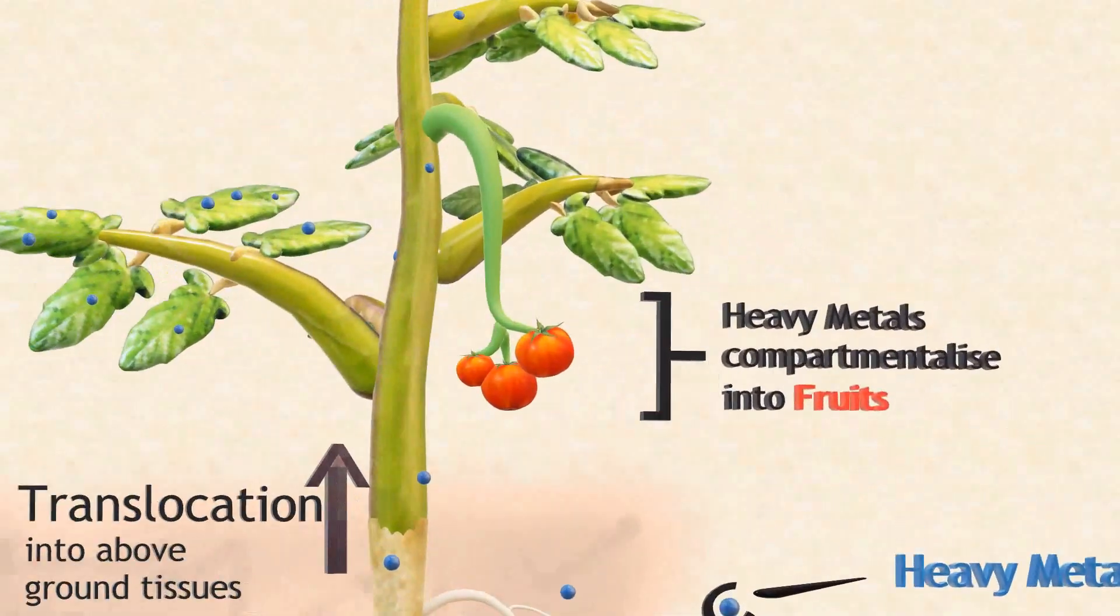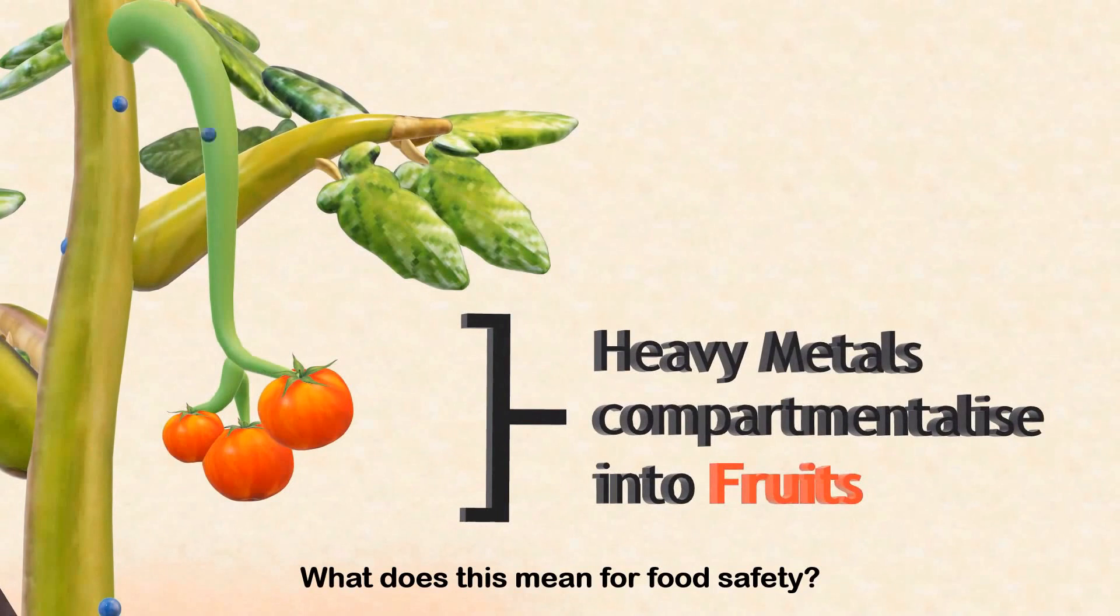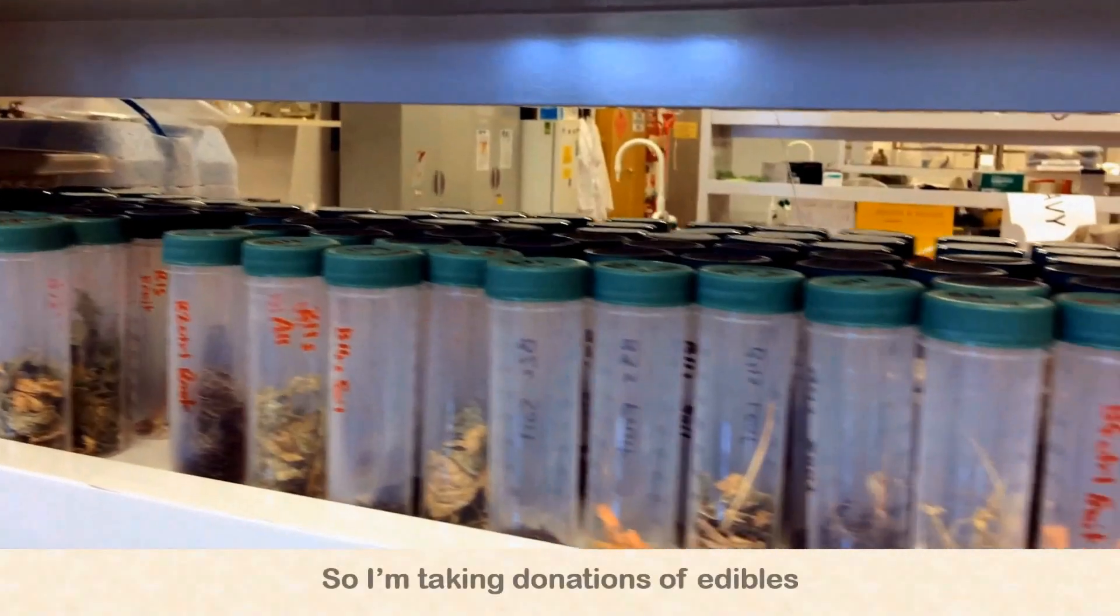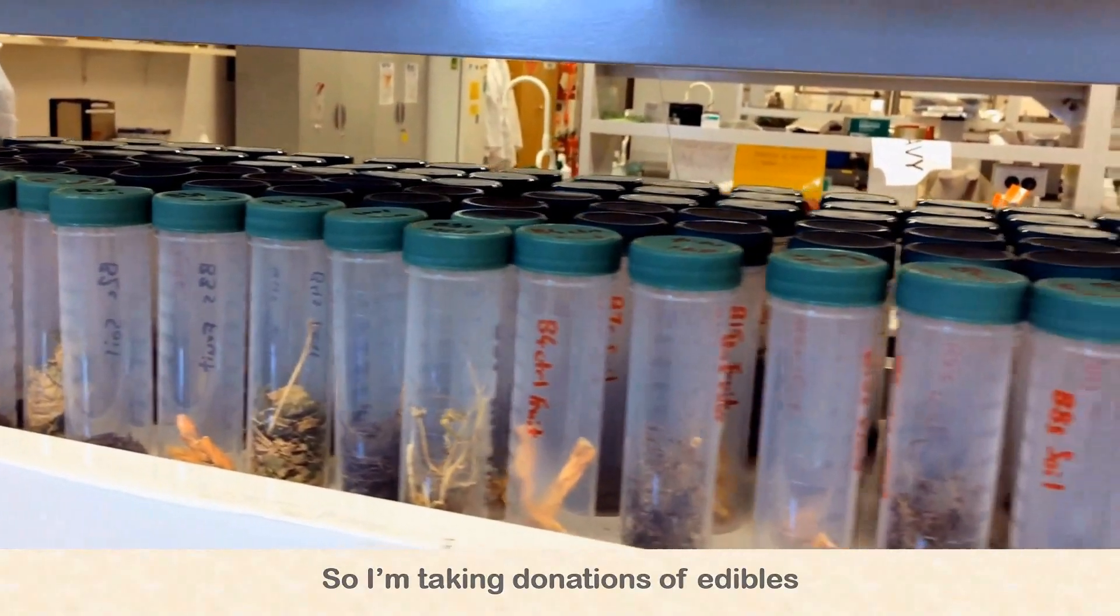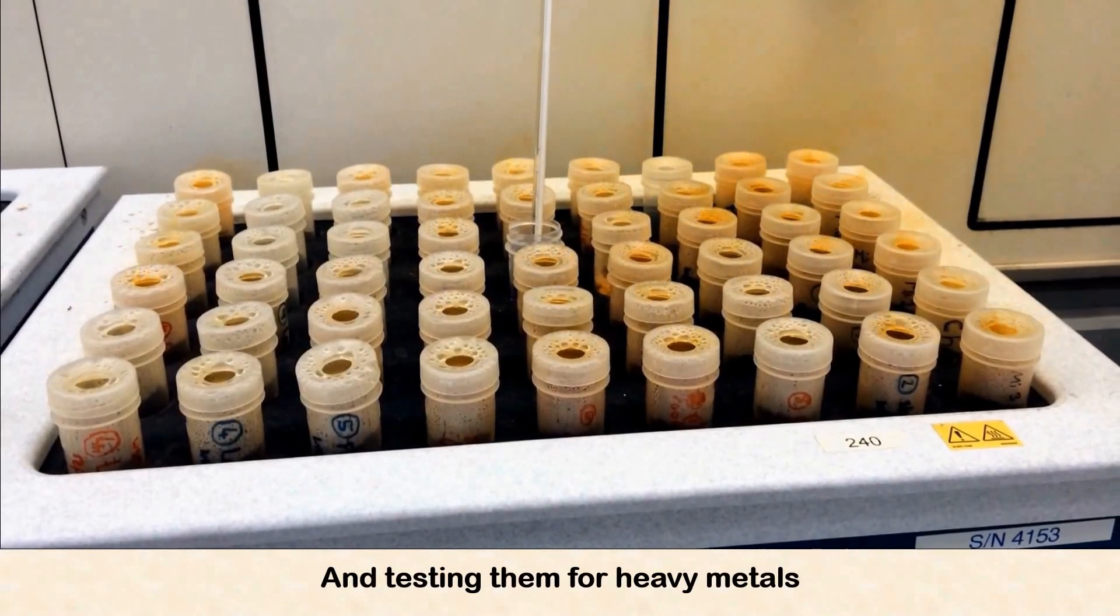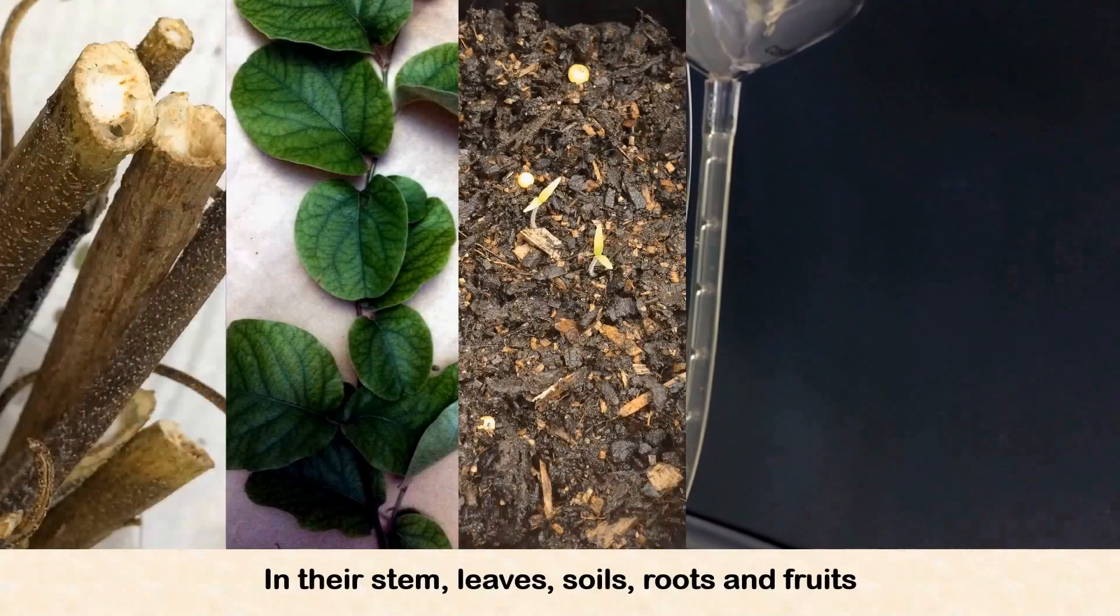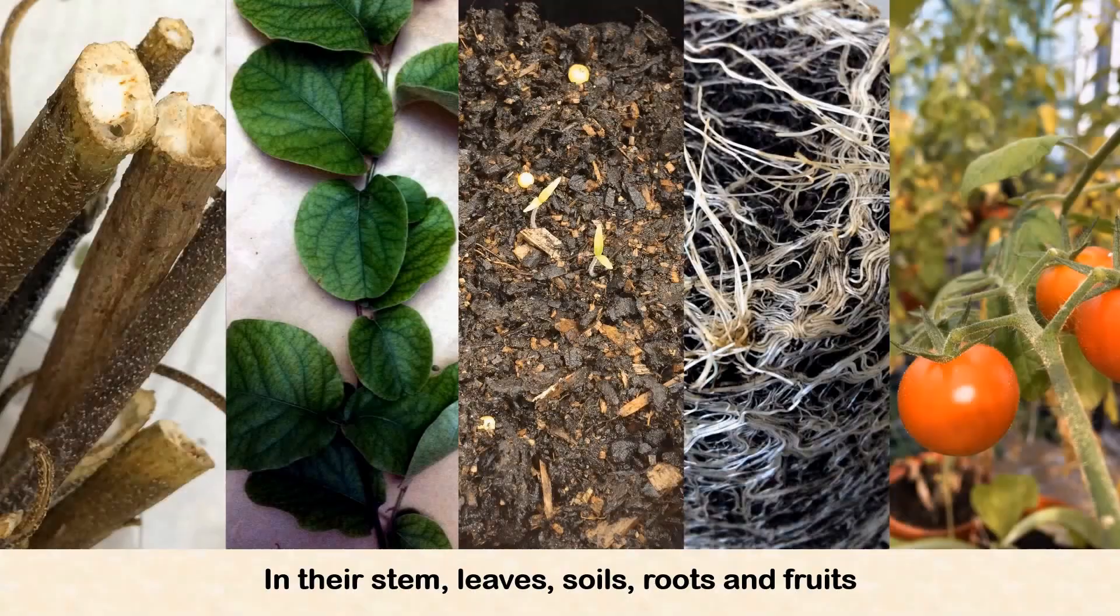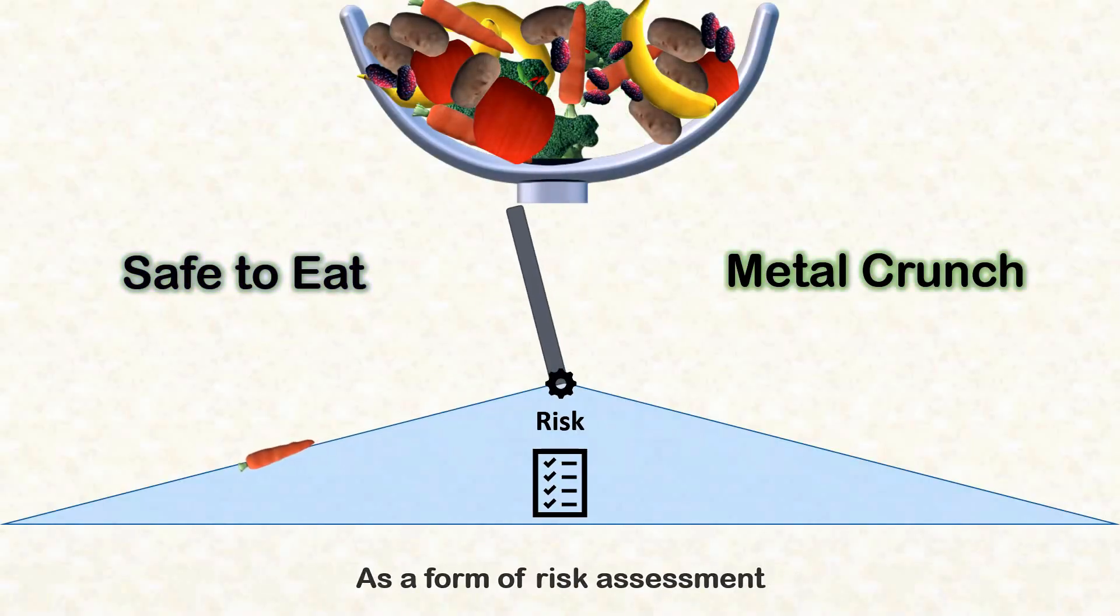But wait, what does this mean for food safety? So I'm taking donations of edibles and testing them for heavy metals in their stem, leaves, soils, roots, and fruits as a form of risk assessment.